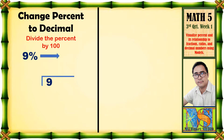So, 9 divided by 100. Ngayon, nasaan yung percent? Magdagdag tayo ng decimal point at dalawang zero. Yung dalawang zero ay katumbas ng percent. Now, let us divide. 9 divided by 100 cannot be. So, ngayon, magdagdag tayo ng decimal point sa taas, at zero bago ang decimal point.